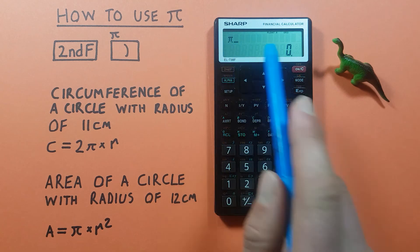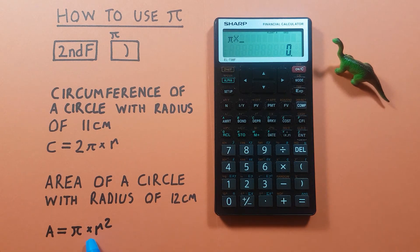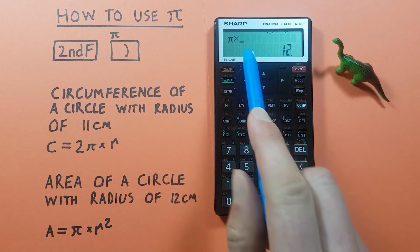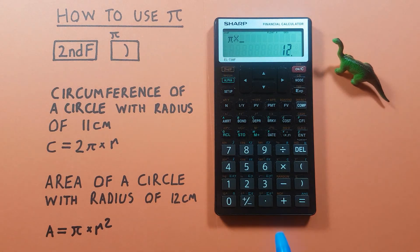...on the screen, times our R, which was 12, and then square that. There we go—12 squared. That's our radius squared. Now press equals...